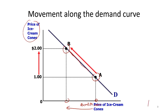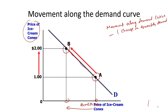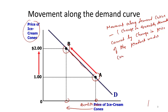Movement along the demand curve, which is also known as change in quantity demanded, is caused by a change in the price of the product under consideration — the product that we are trying to sell. So if price increases, we are moving from point A to B.